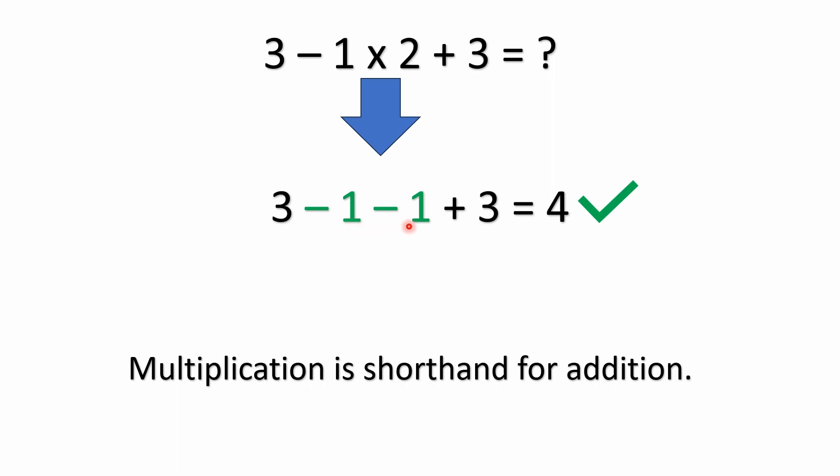Well, 3 minus 1 minus 1 plus 3 is 4. So all I've done here was just replace the multiplication with the equivalent addition, which in this case works out to subtraction. You've got to keep track of this negative sign. I know that confuses a lot of people.